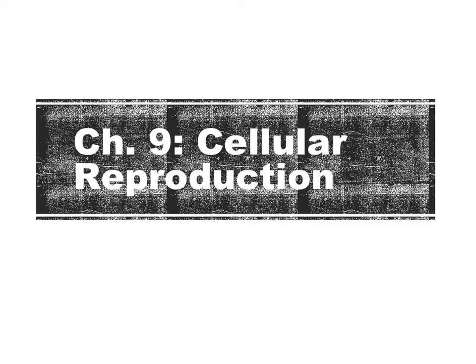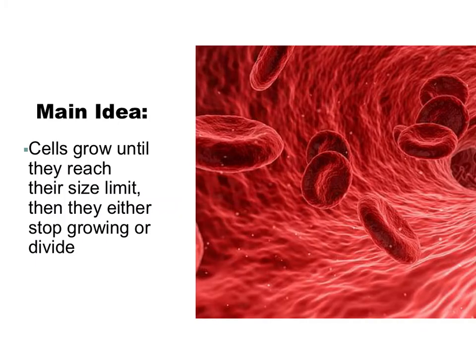Today we're going to start chapter nine, which is cellular reproduction. The main idea of this chapter is that cells grow until they reach their size limit, then they either stop growing or they divide.